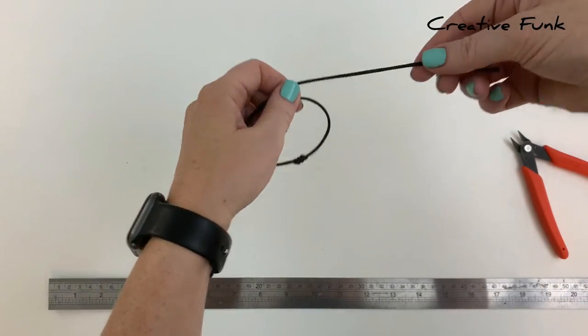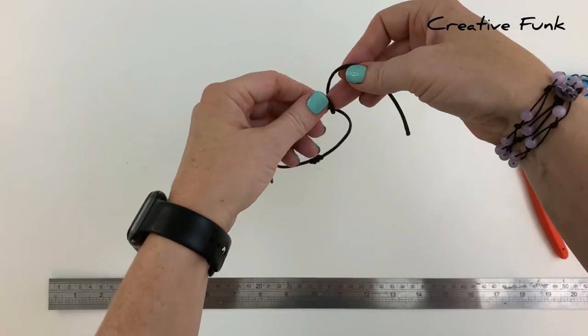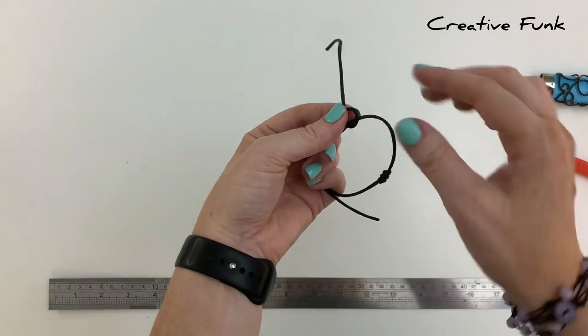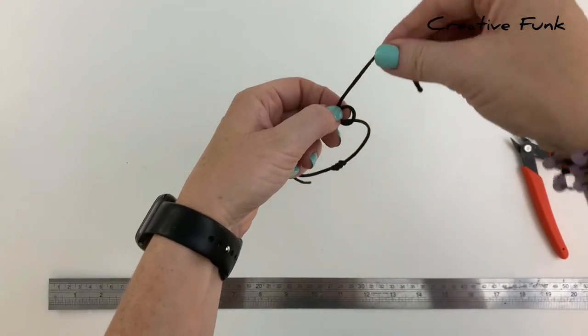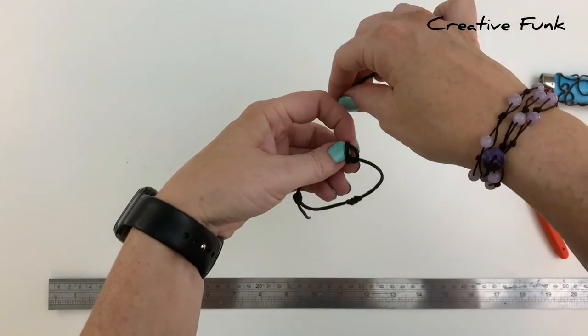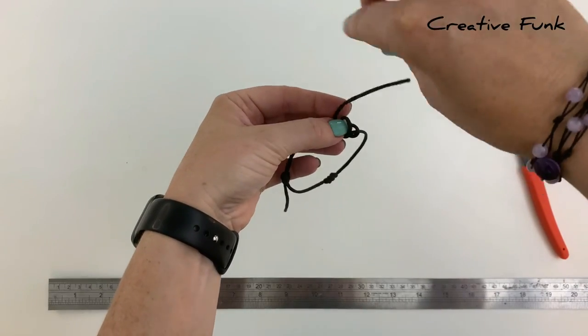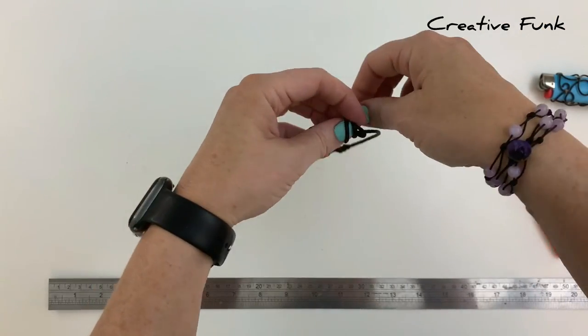And we bring that tail over the front, down and out the back to create our first loop. Then again over the front, down and out the back for our second loop, and then again for a third loop as well.